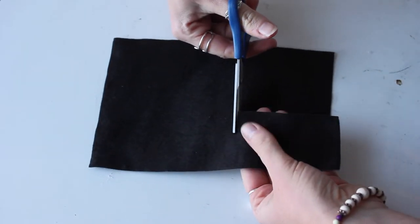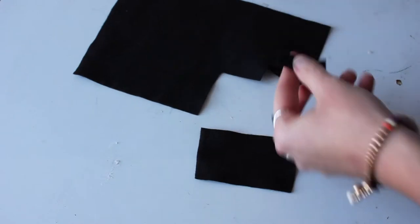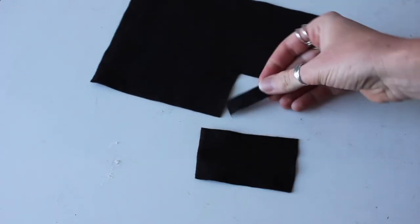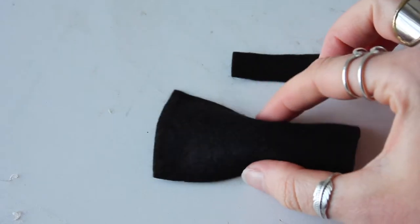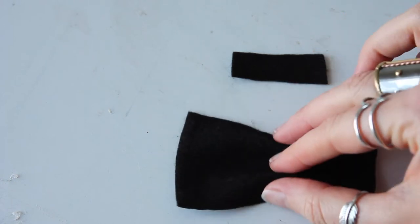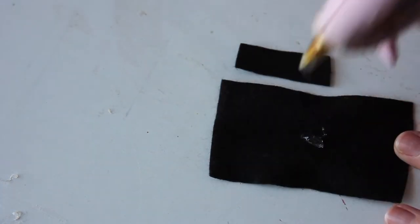So first off it's the bow tie which is a removable option. We have two rectangles, one very large, one small. You pinch the large one together and that is your bow tie and then the little piece just kind of covers that up.